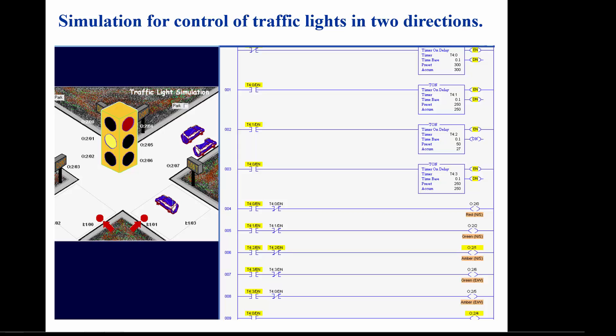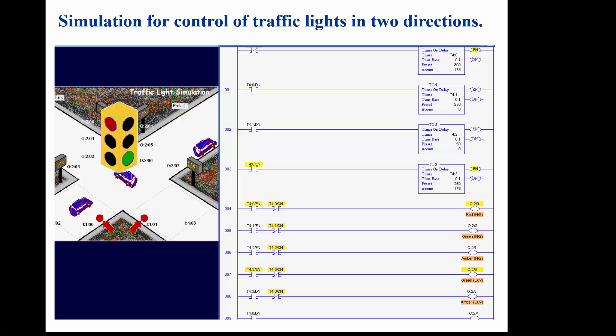Notice how the status of the enable and done bits control the light sequence. At this step in the sequence, the north-south red light is on and the east-west green light is on. Timers T4:0 and T4:3 are timing. At the next step, T4:3 finishes timing, which turns off the east-west green light and turns on the east-west amber light. The north-south red light will remain on until T4:0 has finished timing.